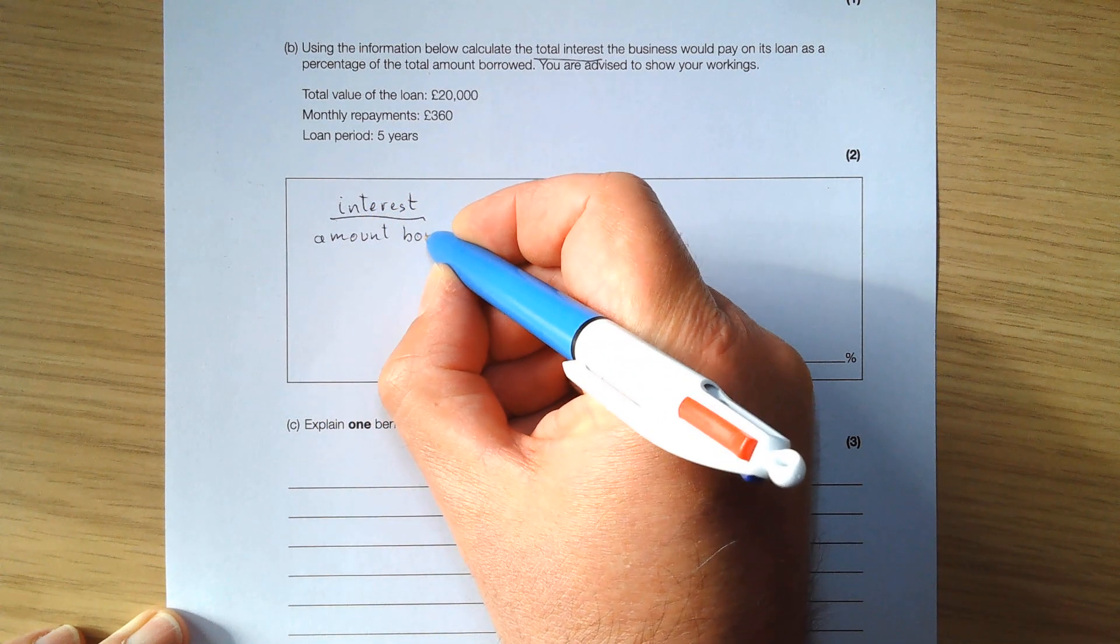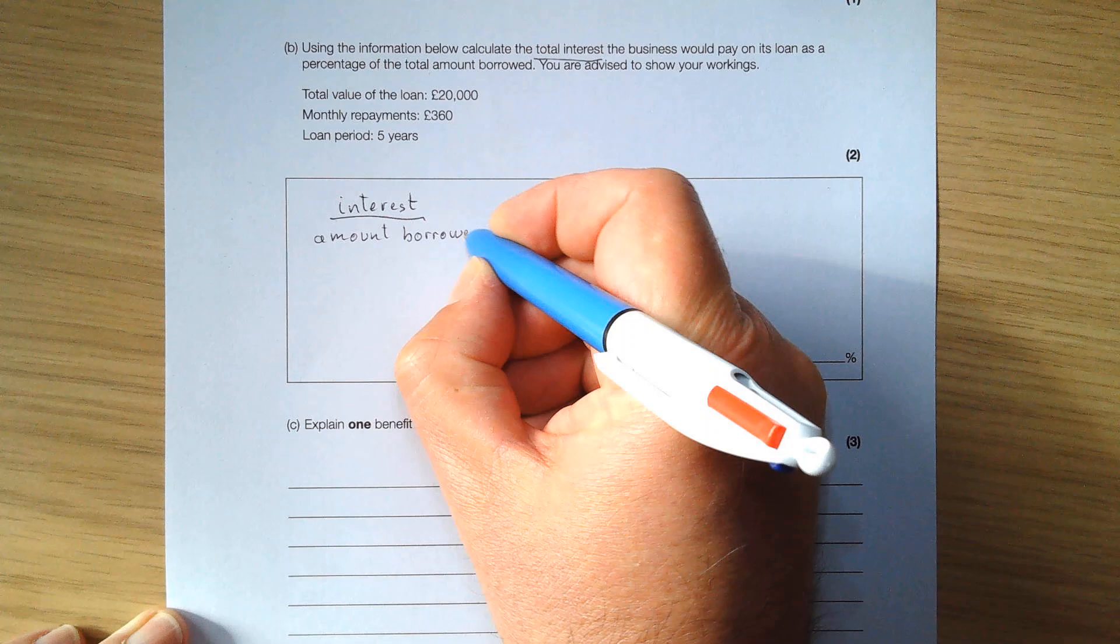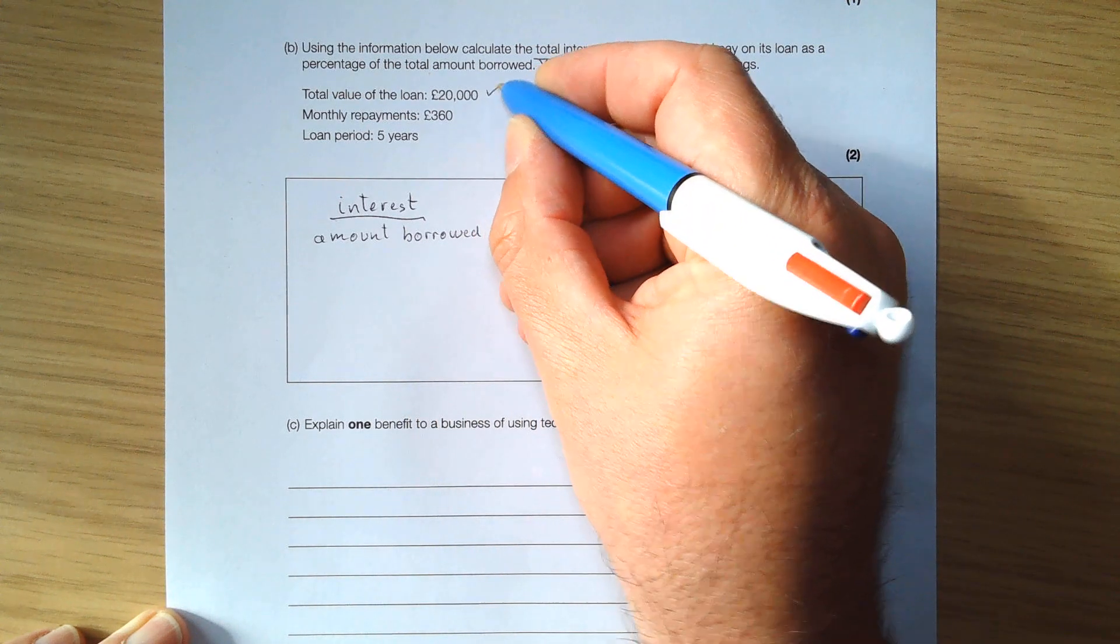The amount borrowed we already know, it's given to us, but the total interest we need to calculate it.